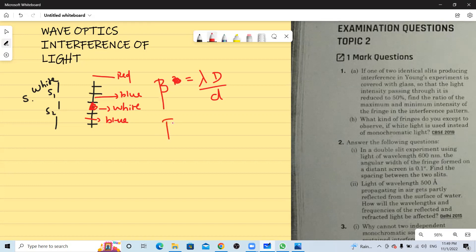And the beta is directly proportional to lambda. Therefore, the wavelength of red is always greater than wavelength of blue. And therefore the fringe width of red will be greater than fringe width of blue. Which means in the interference pattern, the red fringe will be bigger, the blue fringe is broader. So this red fringe will be broader than any other fringe in that interference pattern.